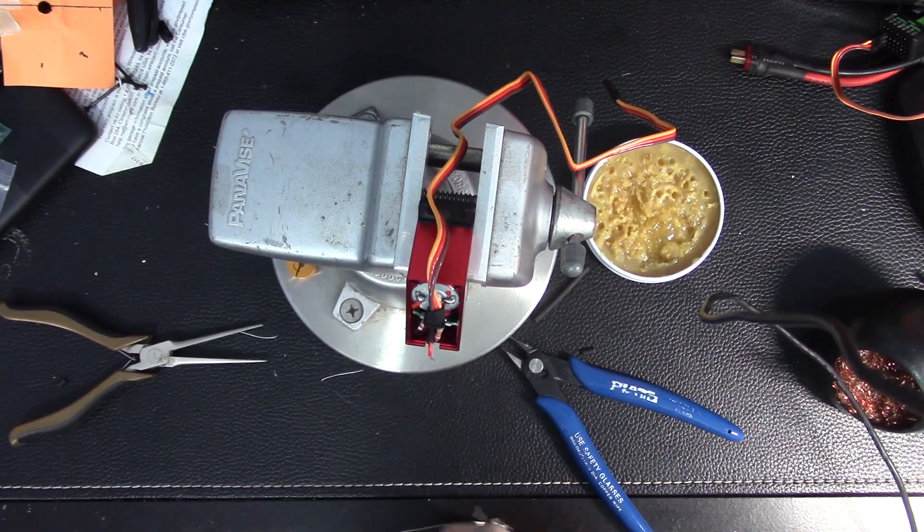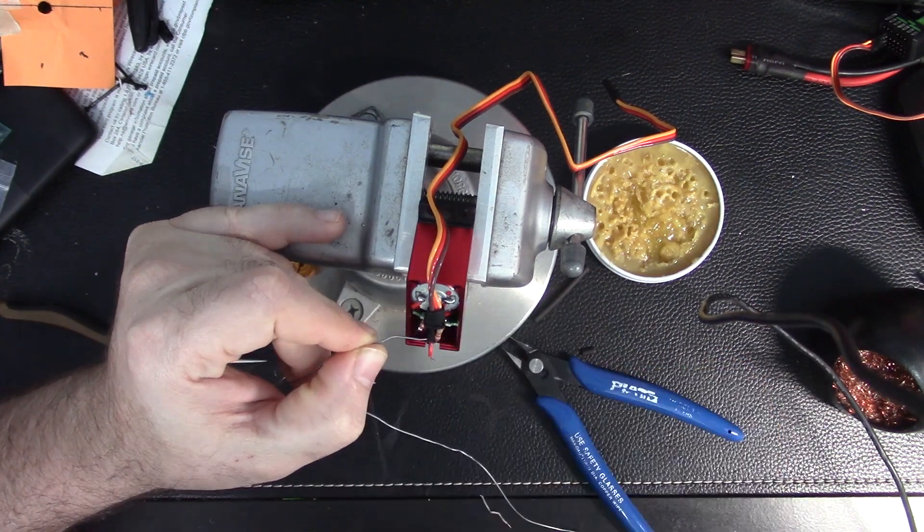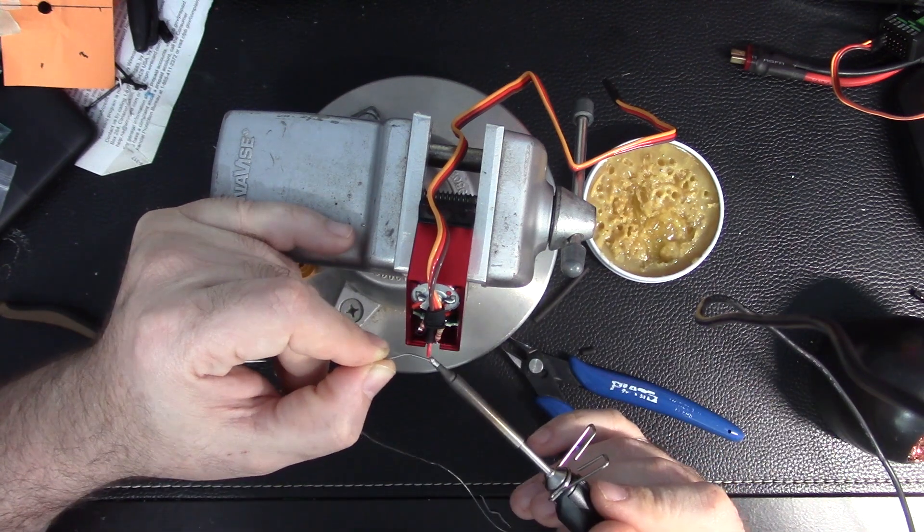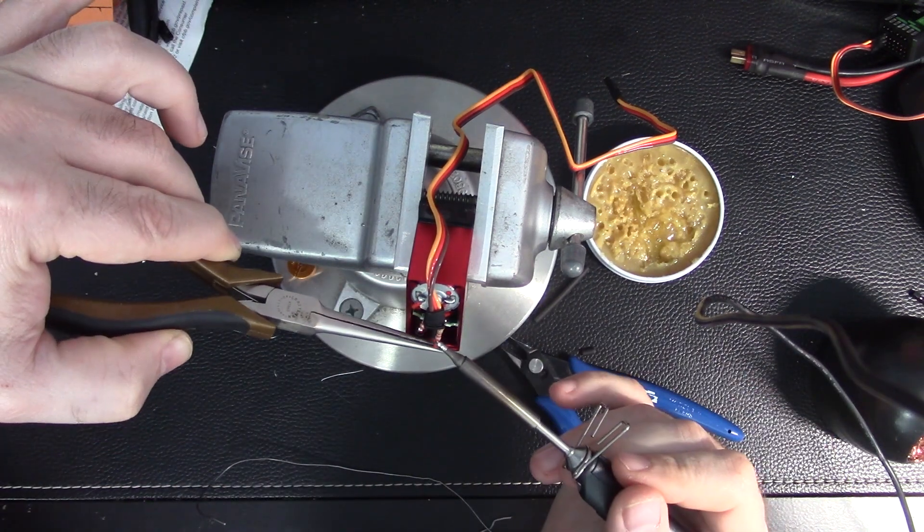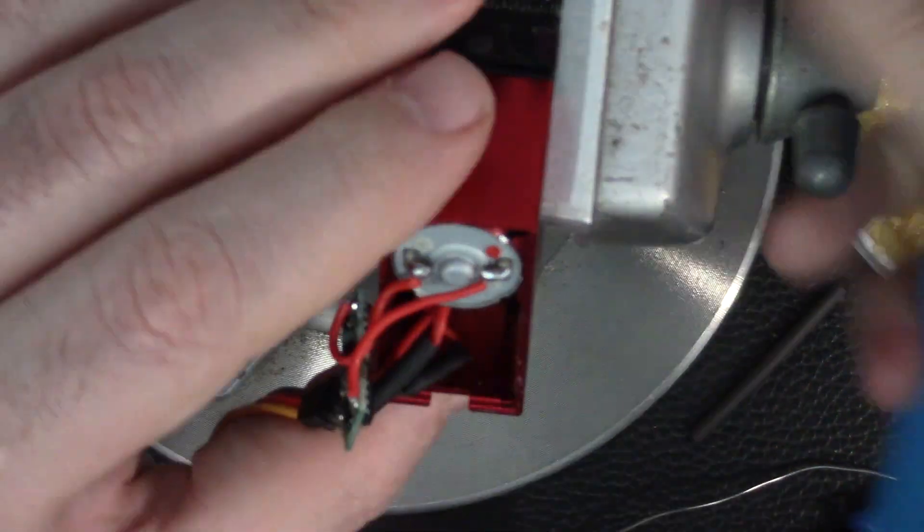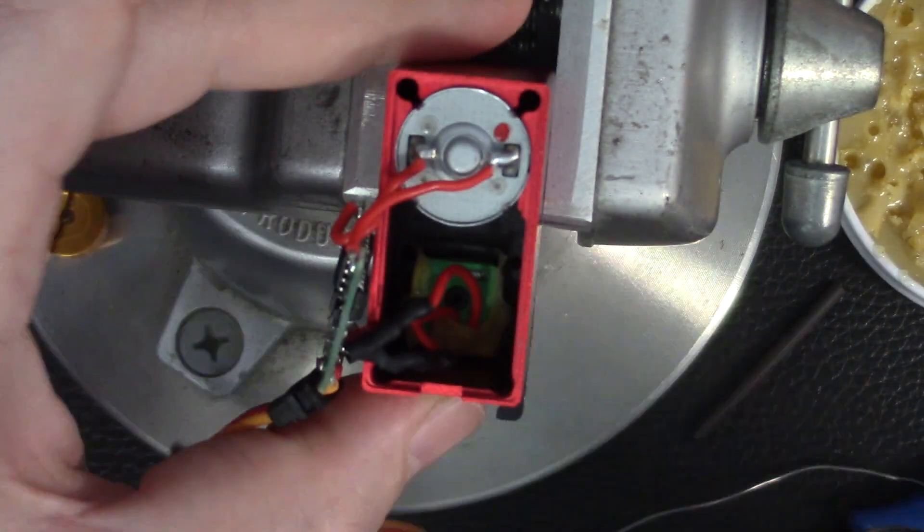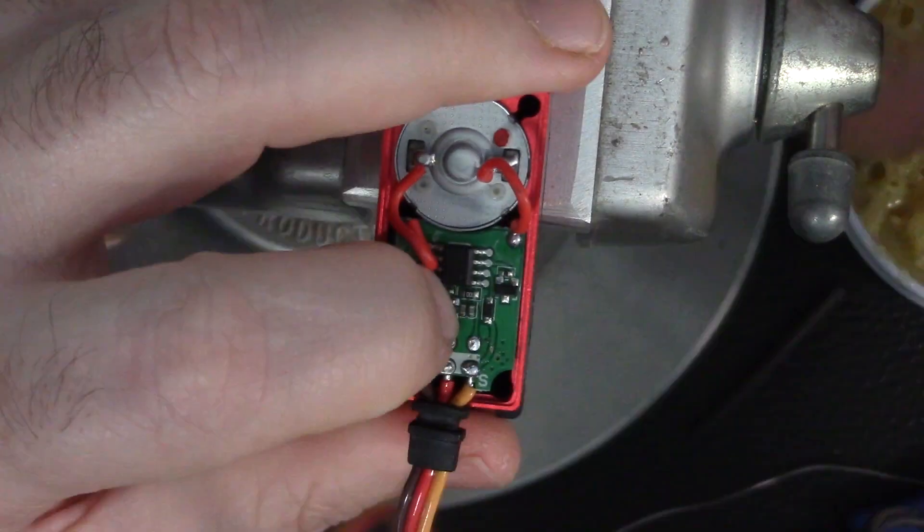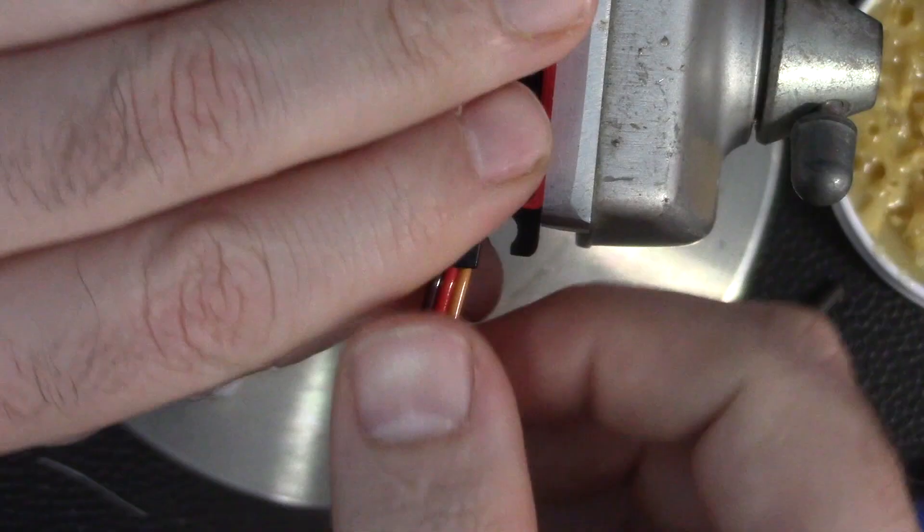Heat shrink. Then we can solder on the resistor. We just have to shrink up the heat shrink to protect the resistors and reseat this board and get the back faceplate on and we're good to go.